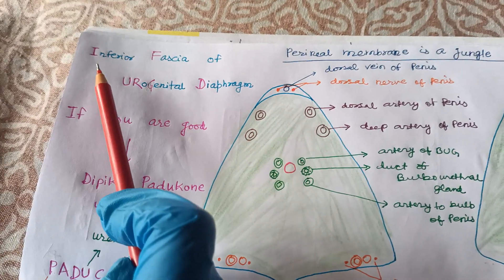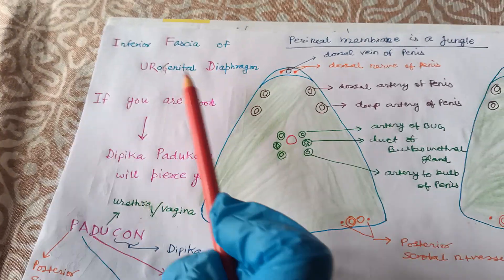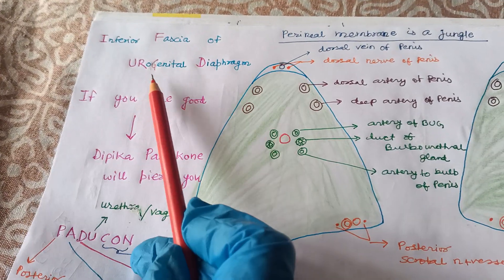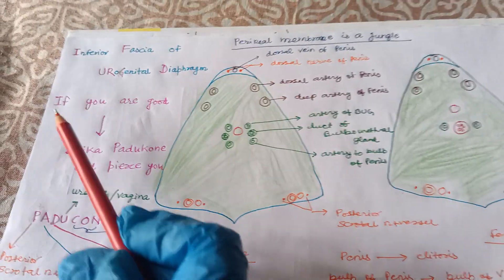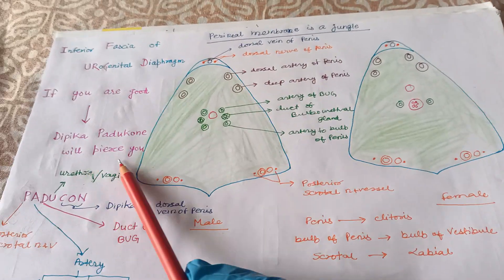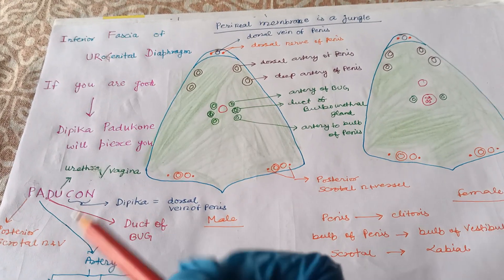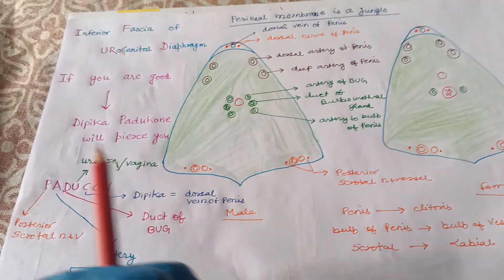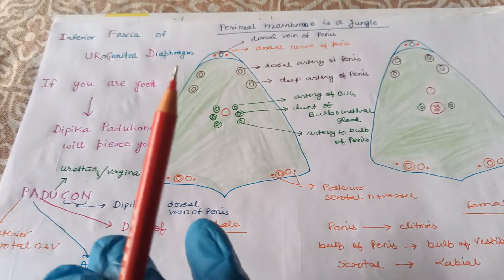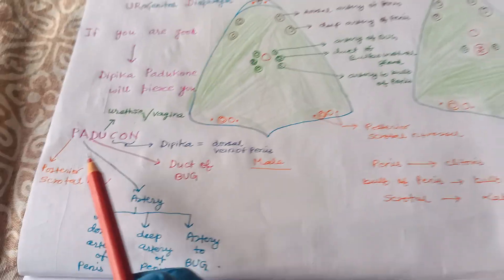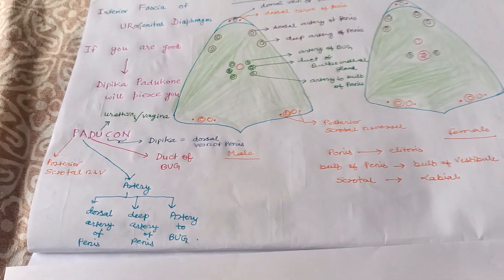Take the initials of each: Inferior Fascia of Urogenital diaphragm — I-F, if. 'If you are good' — that hints to us that it is the perineal membrane. If you are good, then the Deepika Padukone type of person will pierce you. This is a mnemonic for the structures piercing the perineal membrane — PADUKUN — because Deepika Padukone will pierce you if you are good.